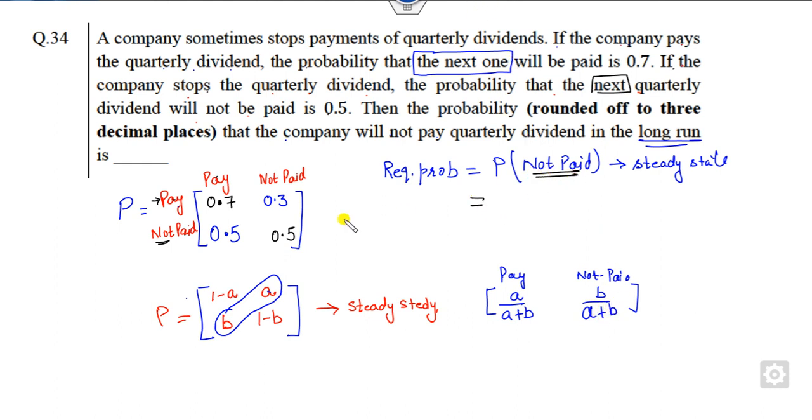So now your target is not paid, that is your target to be here. So it means this is my B. So the answer is 0.5 over A plus B. That is 0.8. So the right answer is 5 divided by 8 is the right answer of this problem.